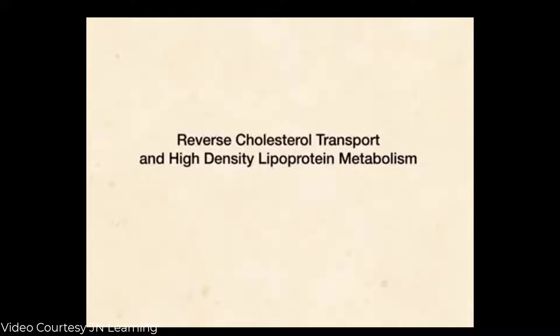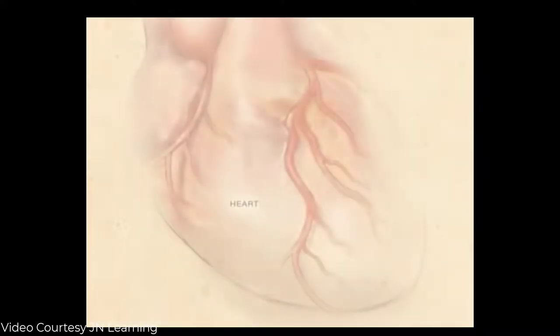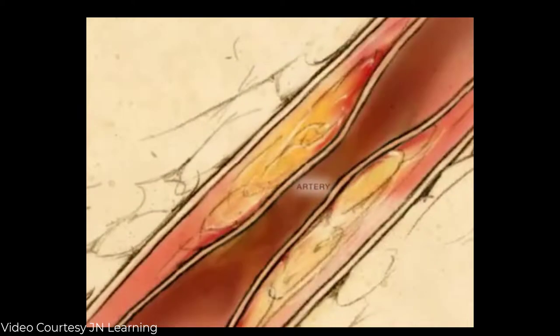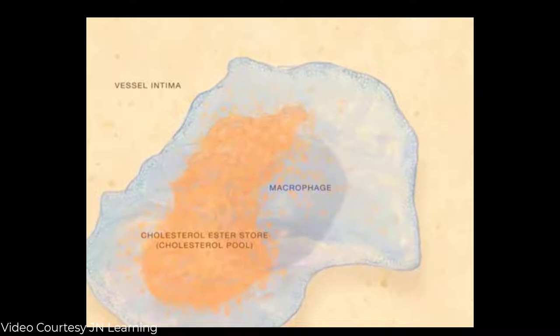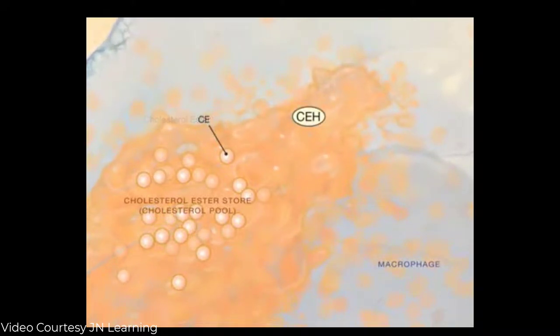This animation provides an overview of how high-density lipoprotein may protect against cardiovascular disease through the mechanism of reverse cholesterol transport. It is a supplement to the JAMA article 'High Density Lipoprotein as a Therapeutic Target' by Inder M. Singh and co-authors. In arterial walls, excess cholesterol stored in macrophages contributes to atherogenesis. Reverse cholesterol transport reduces cholesterol in macrophages by transferring it from macrophage stores to the liver, where it is excreted into bile.